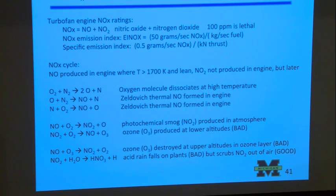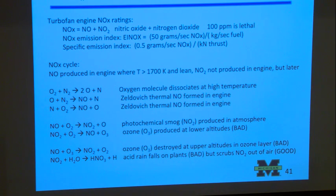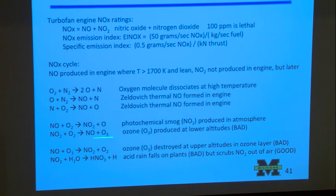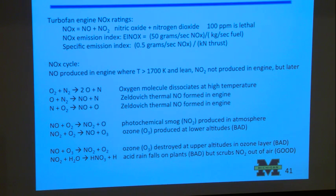Ozone is something you can smell—when you're near a spark plug, you can smell something funny, a bitter smell, and it's ozone. You can produce ozone at lower altitudes where there's a lot of oxygen. But if this NO goes to higher altitudes, the reverse reaction can occur: NO and O₃, and the NO will react with ozone to form NO₂, and the ozone can be destroyed. This forward reaction is favored where there's a lot of oxygen and no ozone—lower altitudes. The reverse reaction is favored where there's a lot of ozone—in the ozone layer. So NO has two bad effects, both at low altitudes and high altitudes.